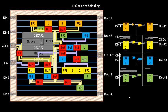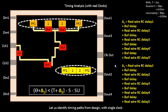After clock net shielding, the next step is to perform timing analysis with real clocks. Now that we have the actual clock nets routed and shielded, we need to do timing analysis with real clocks — even though the data paths are not yet routed. That is part of the ideal physical design flow. I will discuss this in the next video since we are already running out of time. Thank you.